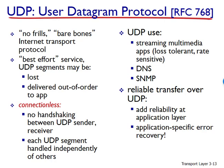The second reason: no connection establishment. TCP uses a three-way handshake before it starts to send data, whereas UDP just blasts away without any formal preliminaries. This is probably the principal reason why DNS runs over UDP rather than TCP — DNS would be much slower if it ran over TCP. HTTP uses TCP rather than UDP since reliability is critical for web pages with text, but the TCP connection establishment delay in HTTP is an important contributor to the delays associated with downloading web documents.